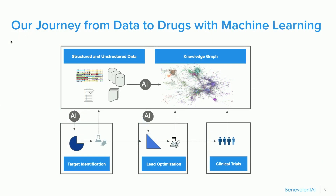We use a variety of data sources: publicly available datasets and databases. We have our own unstructured pipeline where we mine the scientific literature, patents, abstracts, and all kinds of textual data. We also have our in-house experimental data that we feed back, and we aggregate this all together into a graph that we use to train our machine learning models. We use that throughout all stages of the drug discovery process — from target identification through lead optimization, and then the results feed into our own clinical trials.